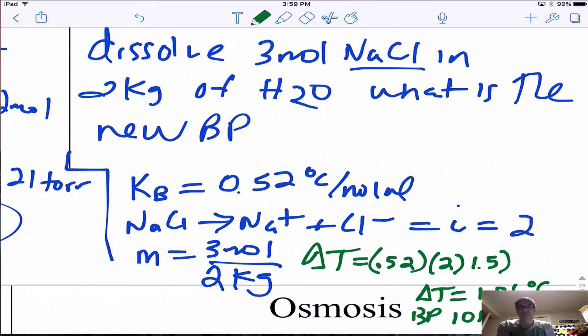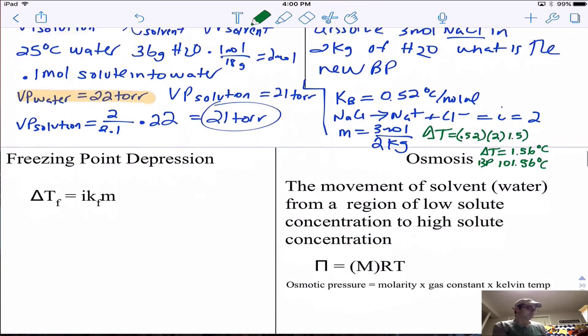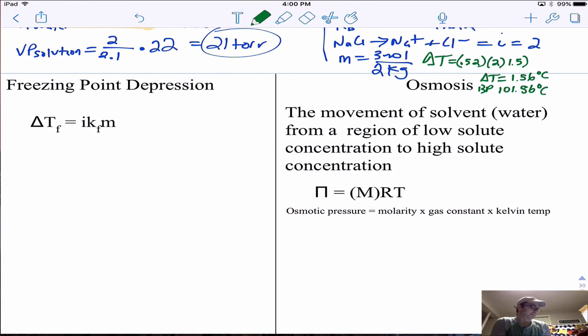We can also do freezing point depression; we can lower the freezing point. It's snowing out right now actually, and so this is something that's really applicable because we can lower the freezing point of ice and it will freeze at a lower temperature.